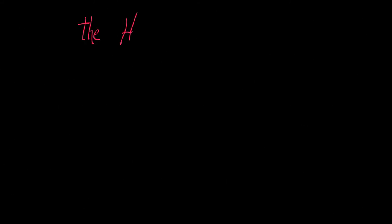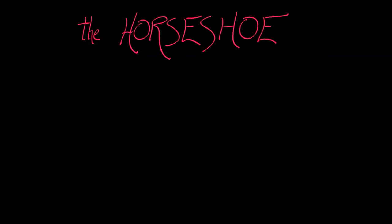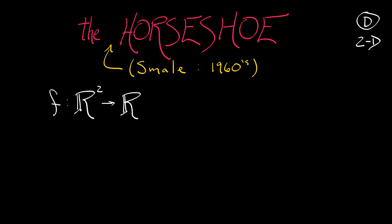The Horseshoe, otherwise known as the Smale Horseshoe, invented by Stephen Smale in the 1960s, is a discrete-time 2D system given by some function f from the plane to itself. This function has some nice properties. It's a homeomorphism - remember what that means? That means it's continuous and it has a continuous inverse.